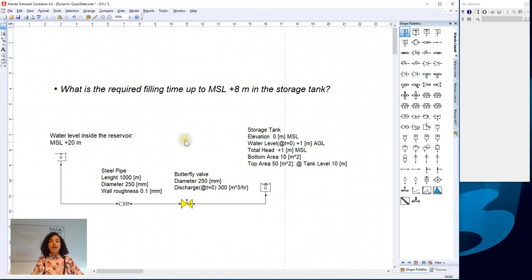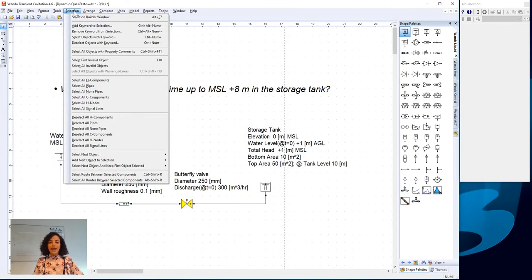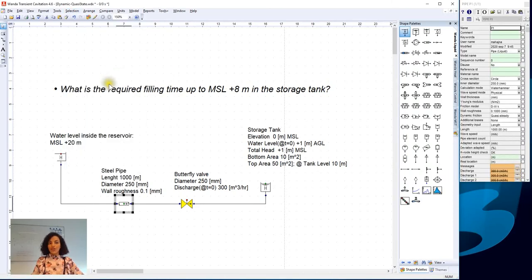Now we need to go to Selection in order to check if we are lacking any data or properties of any hydraulic components in the system, and we ask Wanda to select all invalid objects. Now Wanda is highlighting the pipe component for us because we are lacking the values of wall thickness and Young's modulus.